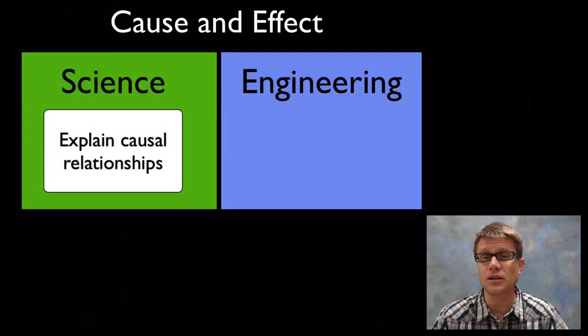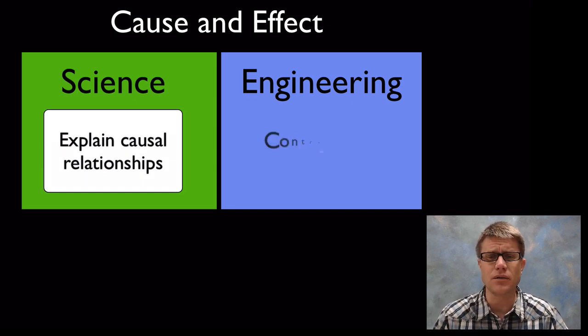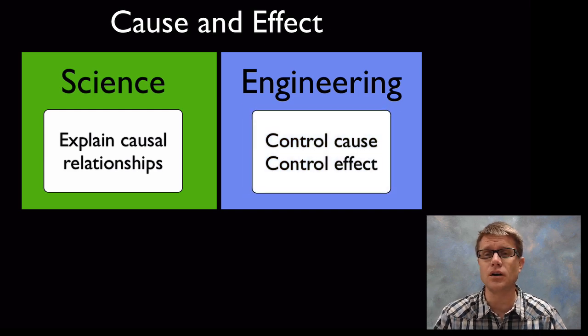In science, cause and effect allows us to explain causal relationships. This affects that. In engineering it's a little bit different. We want to be in control of the cause so we can also control the effect, especially in a design.